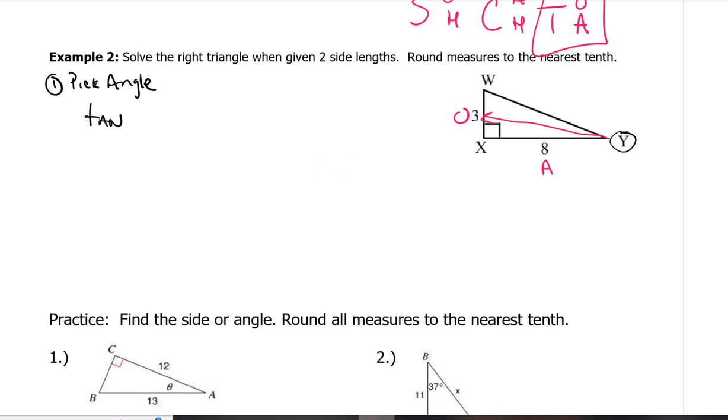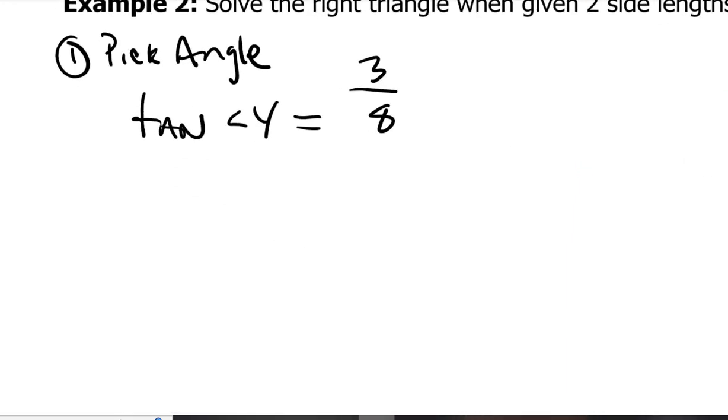Tangent is going to help us with that opposite and adjacent. So I don't know what angle Y is yet, however I can figure it out using my powers of mathematics, using SOHCAHTOA, the trig function tangent. So tangent of this angle Y is going to be equal to this ratio of 3 over 8, because 3 is the opposite side and 8 is the adjacent side.